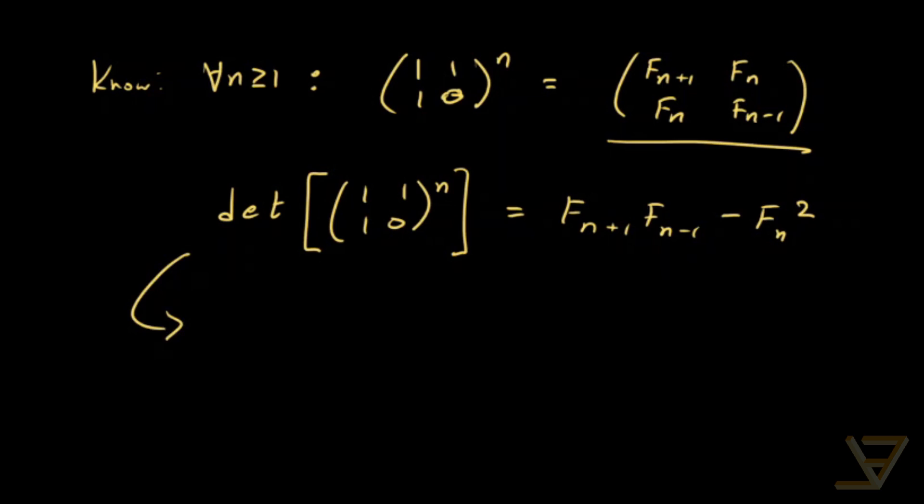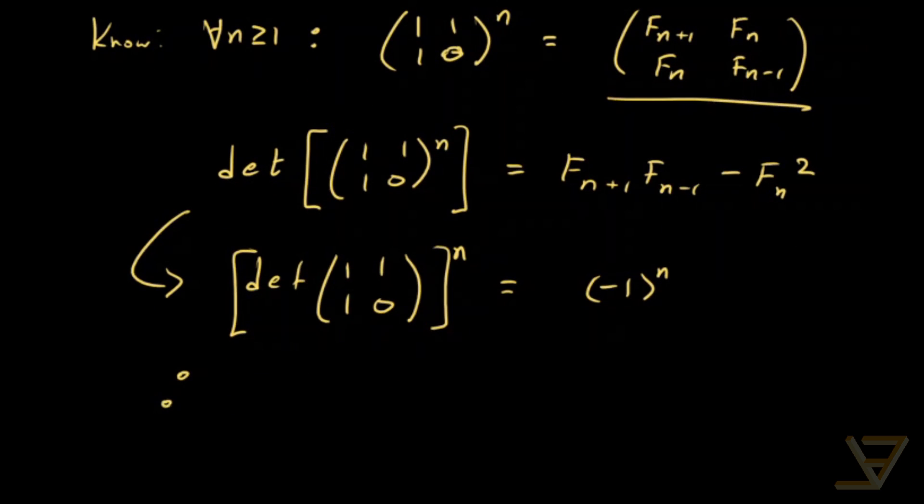And this over here, by the multiplicativity of the determinant, we find that this is equal to the determinant of [[1,1],[1,0]] to the power of n. And that's equal to (1 times 0 minus 1 times 1) to the power of n, so (-1)^n. And that allows us to conclude that (-1)^n equals Fn+1 times Fn-1 minus Fn squared. And that is Cassini's identity.